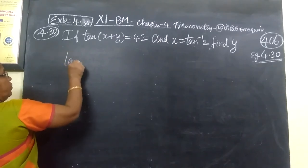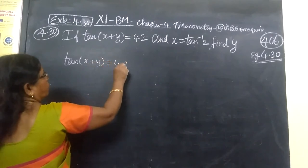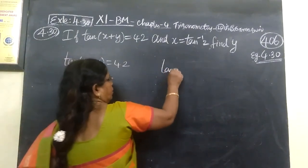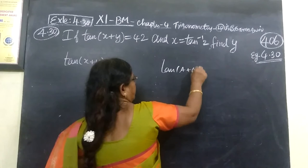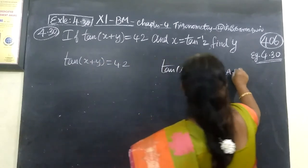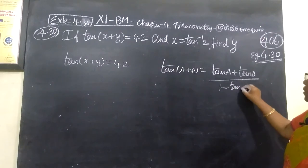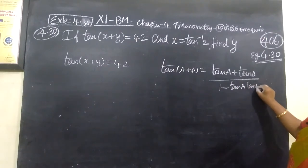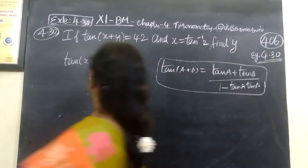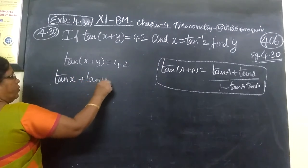Here you are given tan(x + y) = 42. Using the tan(a + b) formula: tan(a + b) = (tan a + tan b) / (1 − tan a · tan b). Applying this formula, tan(x + y) can be written as (tan x + tan y) / (1 − tan x · tan y).